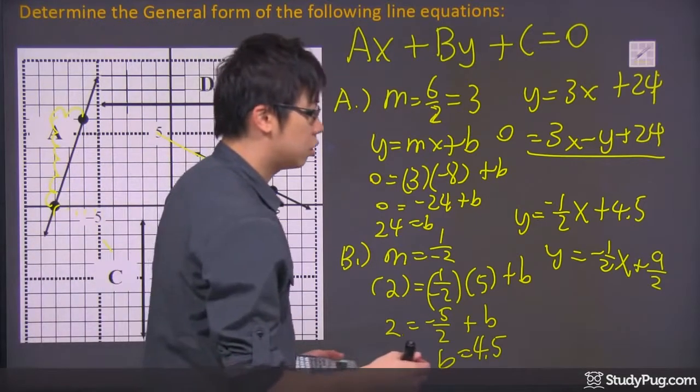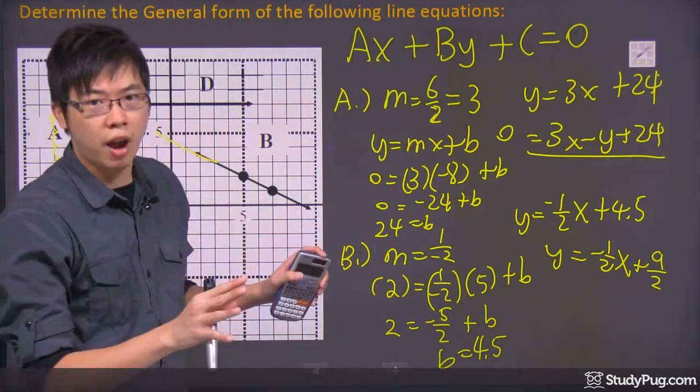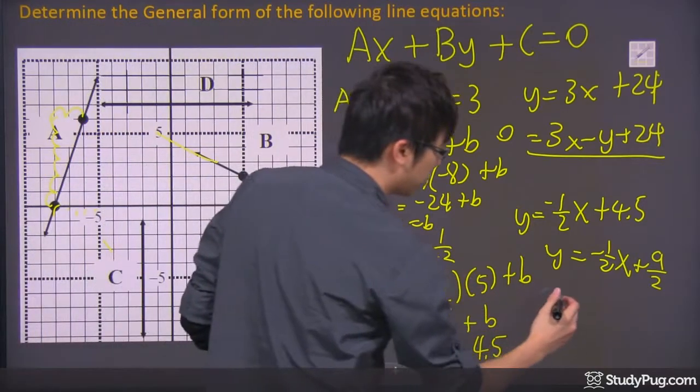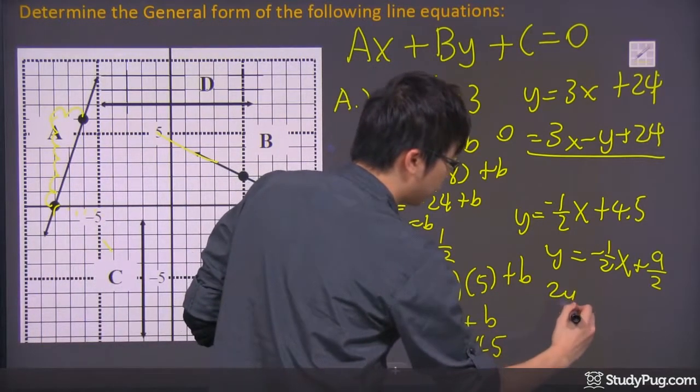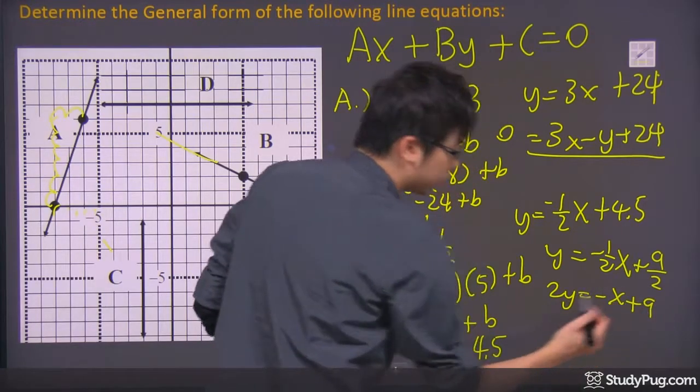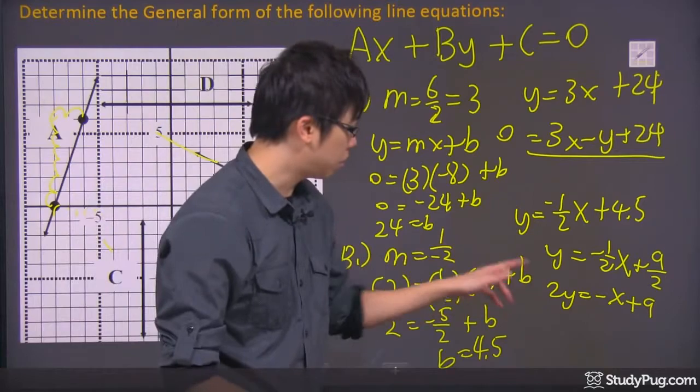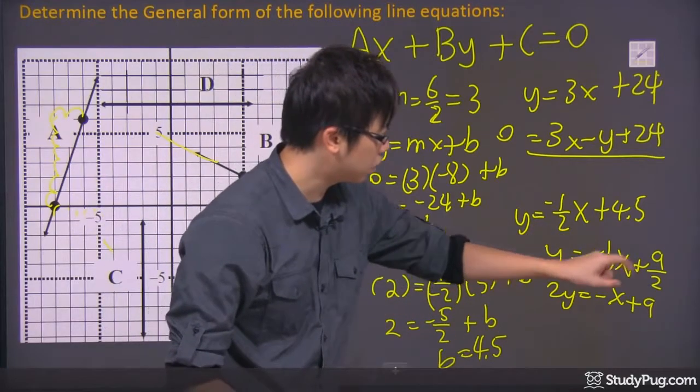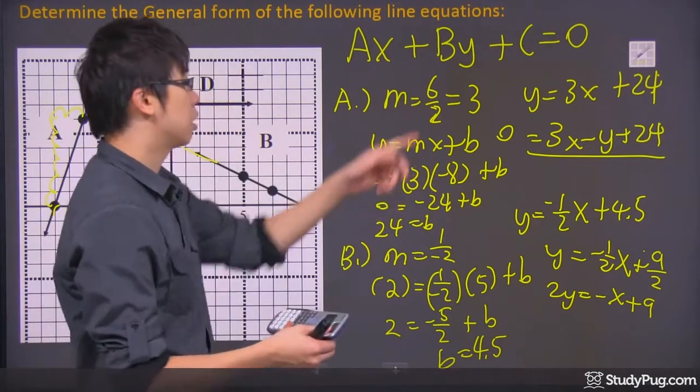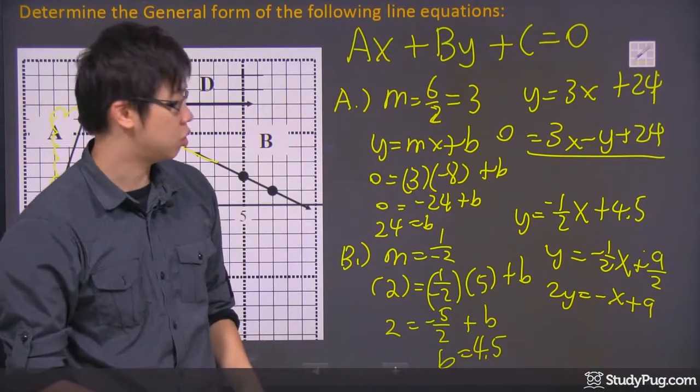So if you actually change this—I'm going to remove that for a second—if you change that into a fraction, we got a negative 1 over 2 for the slope and a 9 over 2 for the Y-intercept, right? You want to change that into just without the fractions. So you want to times everything by a 2. So if you do that quickly, you get a 2Y over here equals to negative X plus a 9.